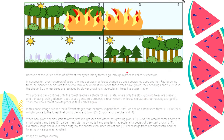One phenomenon that is common to forests is called succession or ecological succession. This could take place over hundreds of years wherein tree species in a forest change as one species replaces another. We have here an example of a forest that has already reached its stable climax state.